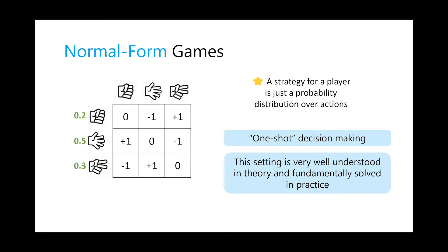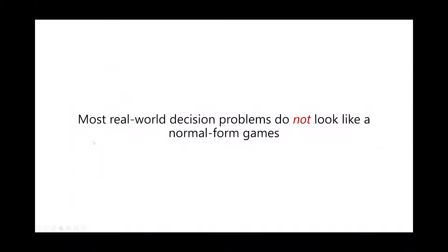This is called one-shot decision making because every player acts once and simultaneously. It's very well understood both in theory and in practice how to solve these games. However, most real-world decision problems do not look like normal form games — they rarely are one-shot. In particular, most interactions involve partial observability of the environment and agents making multiple sequential decisions.